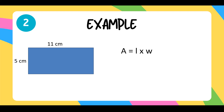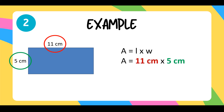Example number 2: we have a rectangle 11 cm by 5 cm. Let's write the formula first — Area is equal to length times the width. Substituting, the length is 11 cm and the width is 5 cm. So area is equal to 11 cm times 5 cm. When we multiply 11 by 5, the product will be 55 square centimeters. Always use square units when writing the unit of measurement for area.